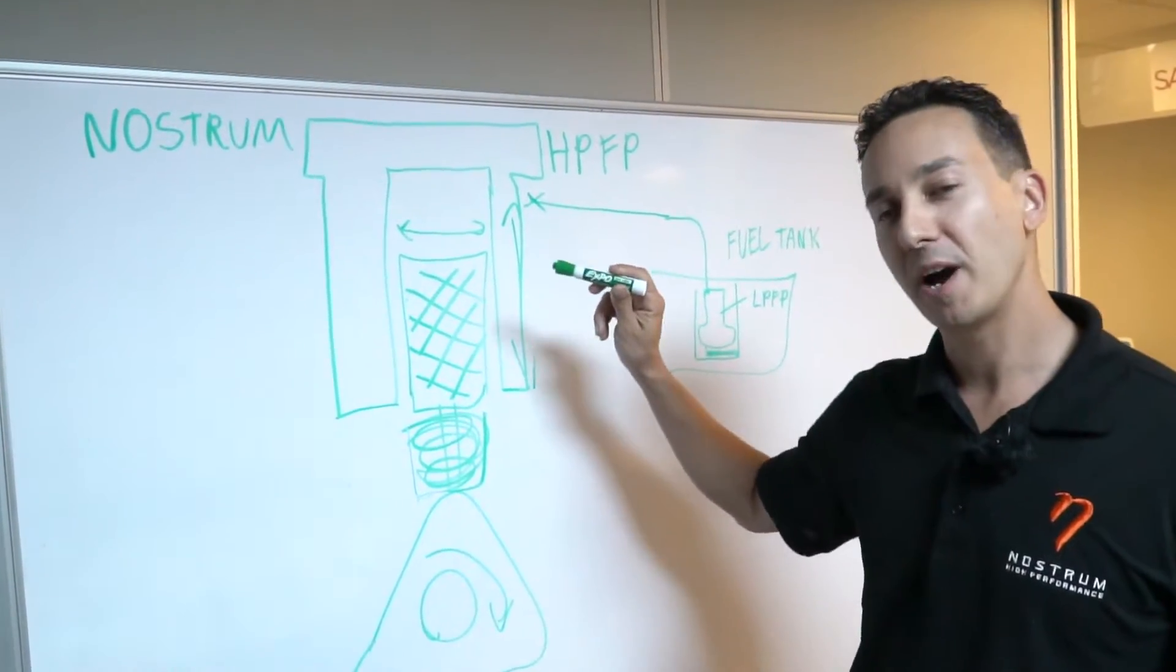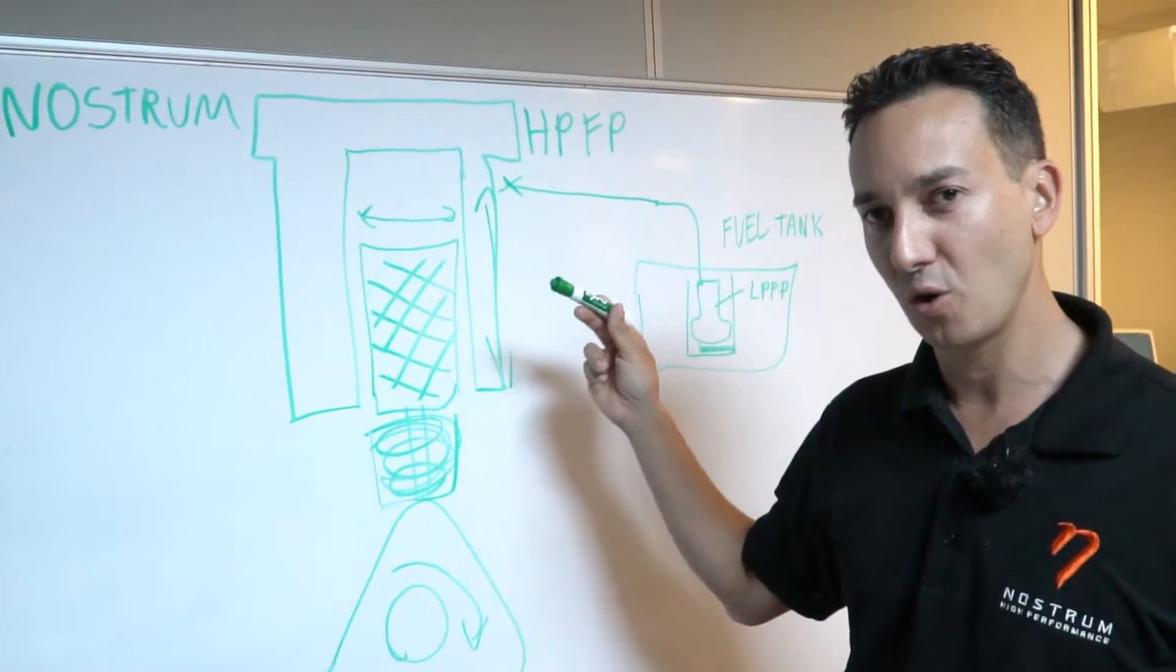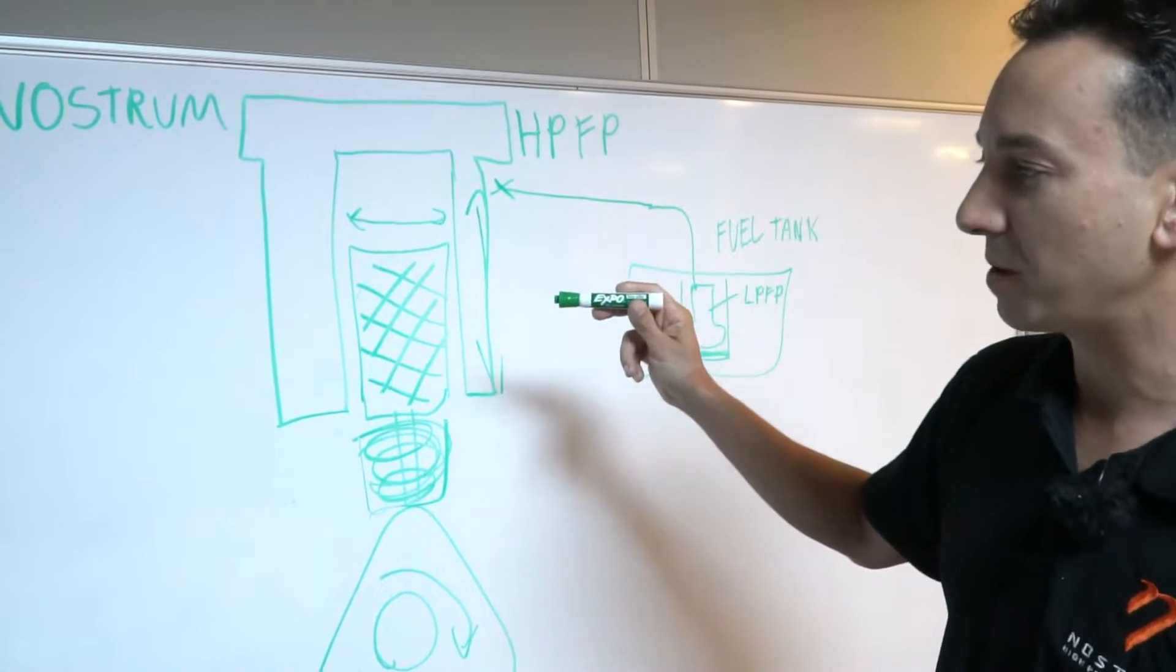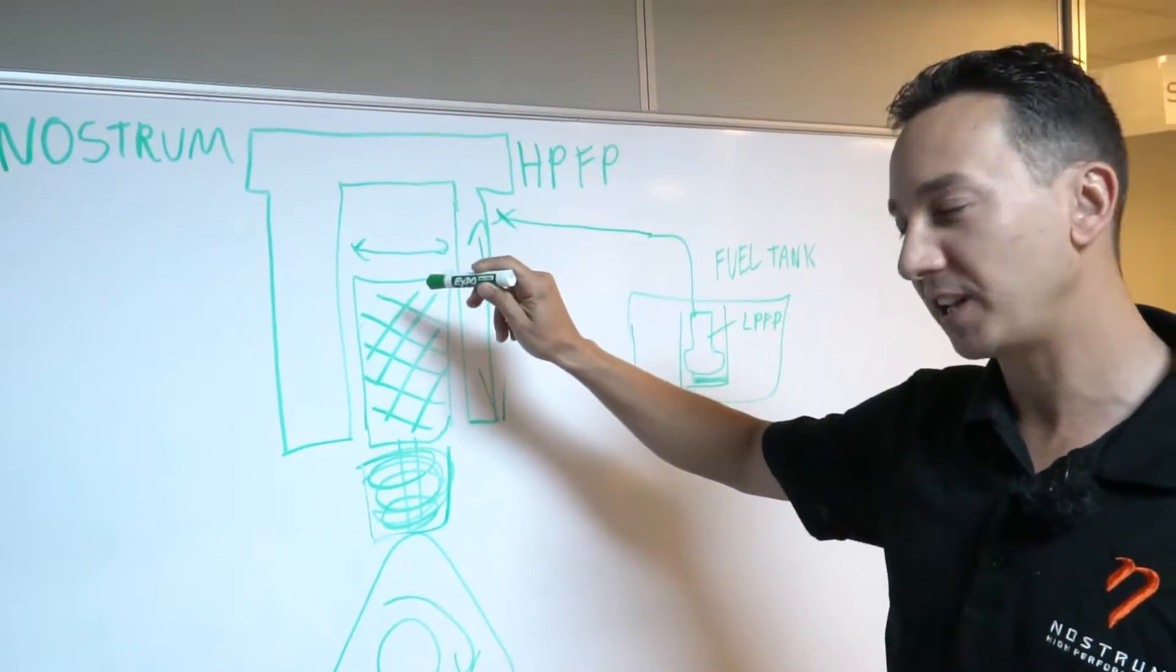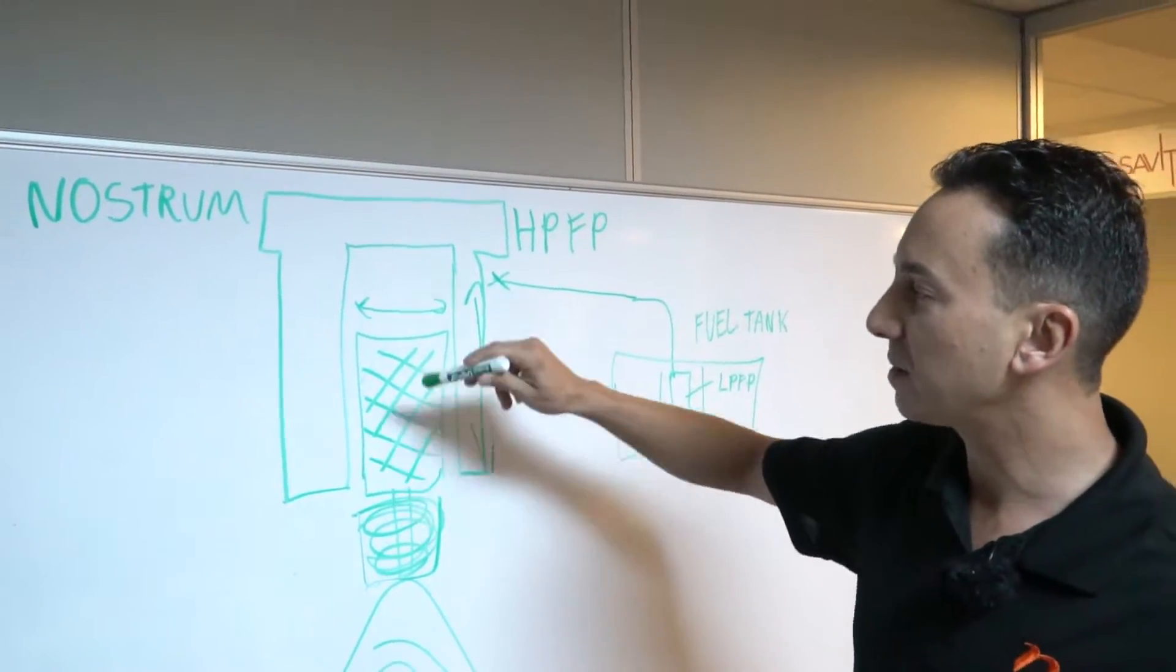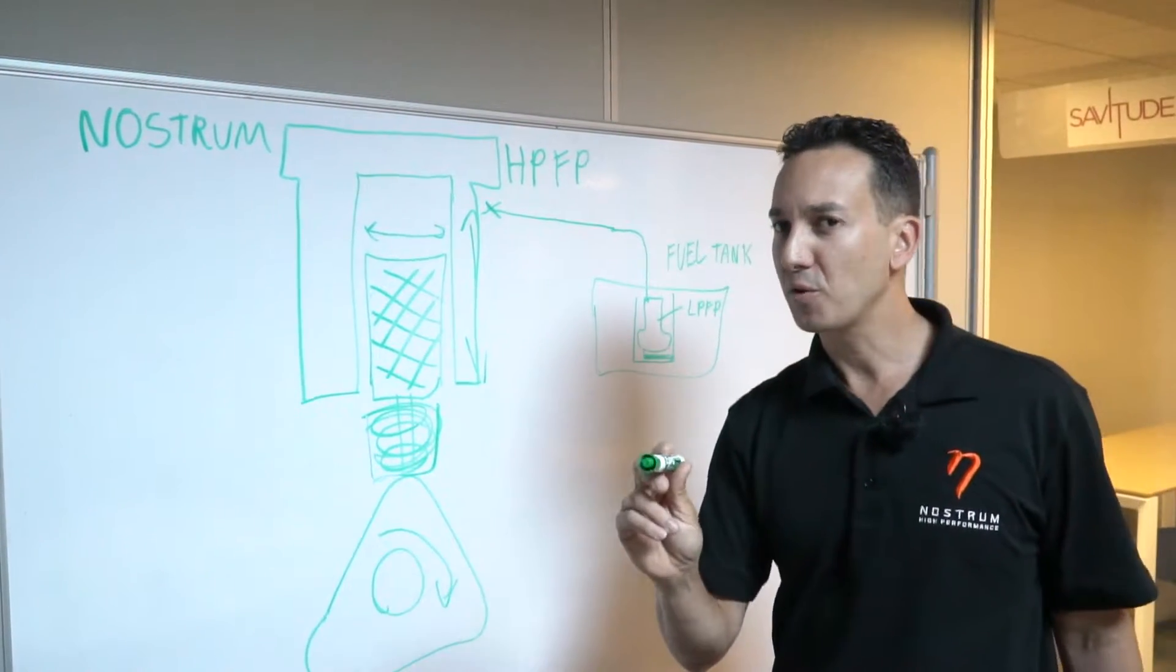So when we say that the Nostrum high-pressure fuel pump has 40% increase in capacity over the factory pump, what we mean is the surface area of this piston is 40% larger. So every time the piston goes up and down, you are getting 40% more fuel.